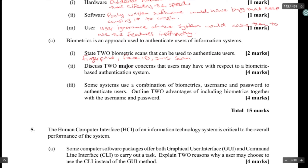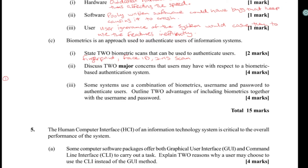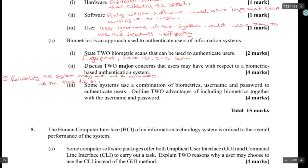Two major concerns that users may have with a biometric-based authentication system — this is a 'discuss' question so you need to give a breakdown. One concern is reliability: the system may not work accurately all the time due to malfunctions. For example, with fingerprints, sometimes you have to scan your finger twice because it fails to read.